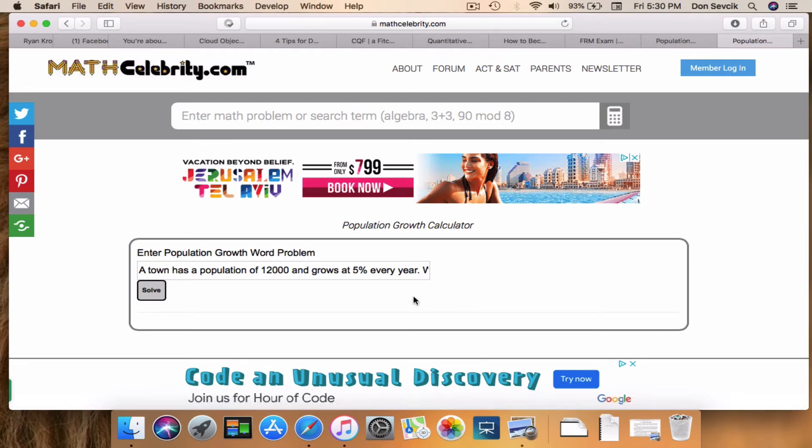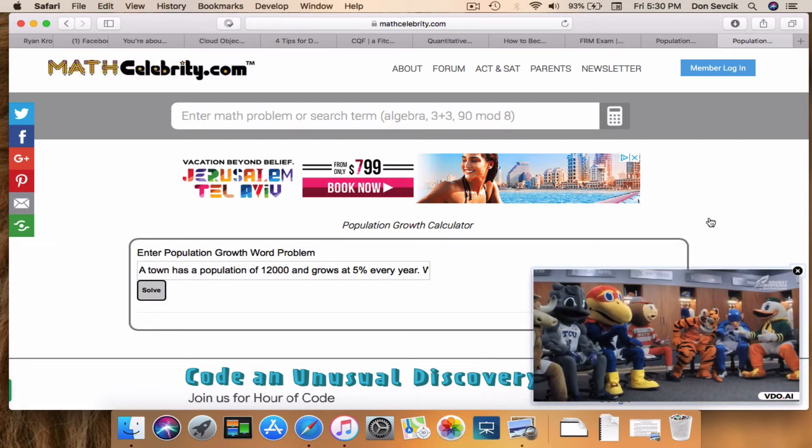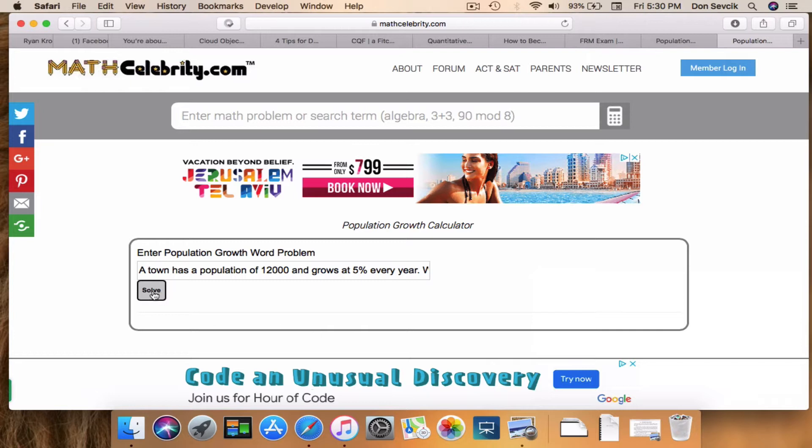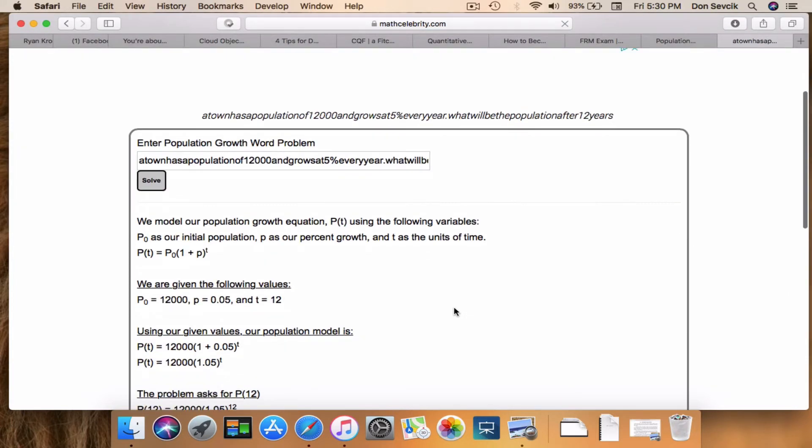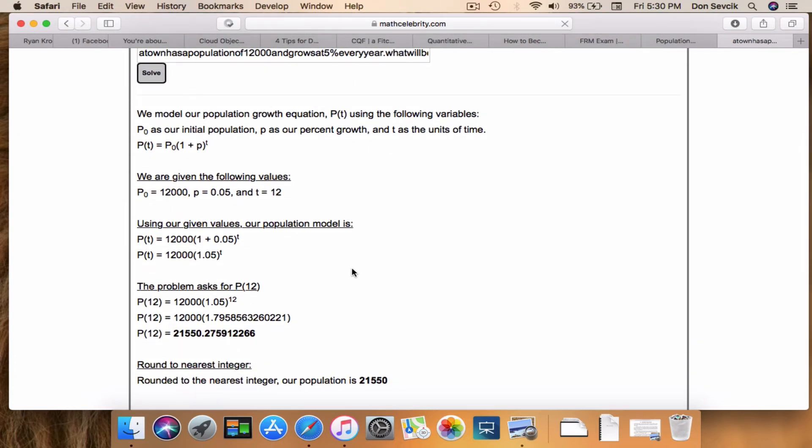Here is our population growth calculator. And you essentially enter your problem in this box. And when you're ready to go, you just hit solve. So this is a similar problem that we cover. There's just a few different numbers. So let's go ahead. So we've got a population, initial population of 12,000, a growth rate of 5%, and a time of 12. We want to know what the population is at time 12. So you go ahead and it plugs and chugs with your numbers just like we did in the video and finds your new population.